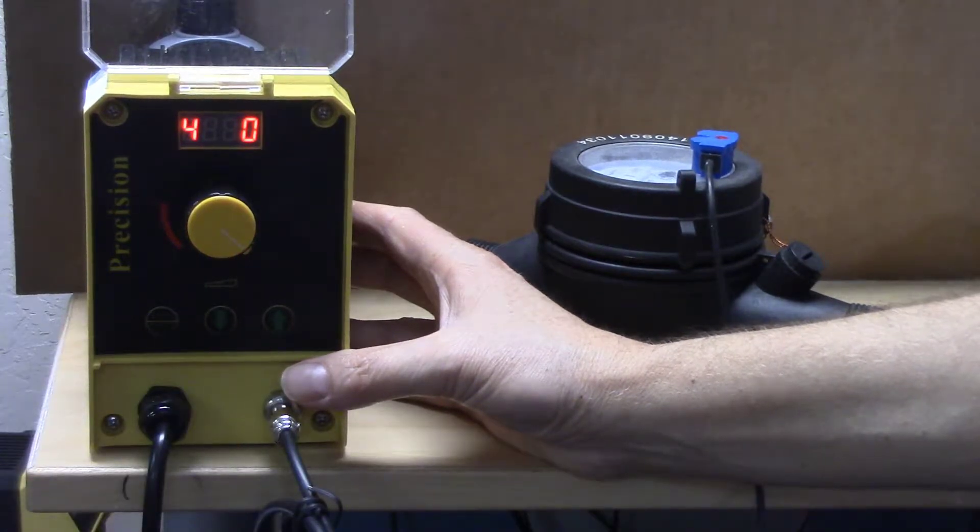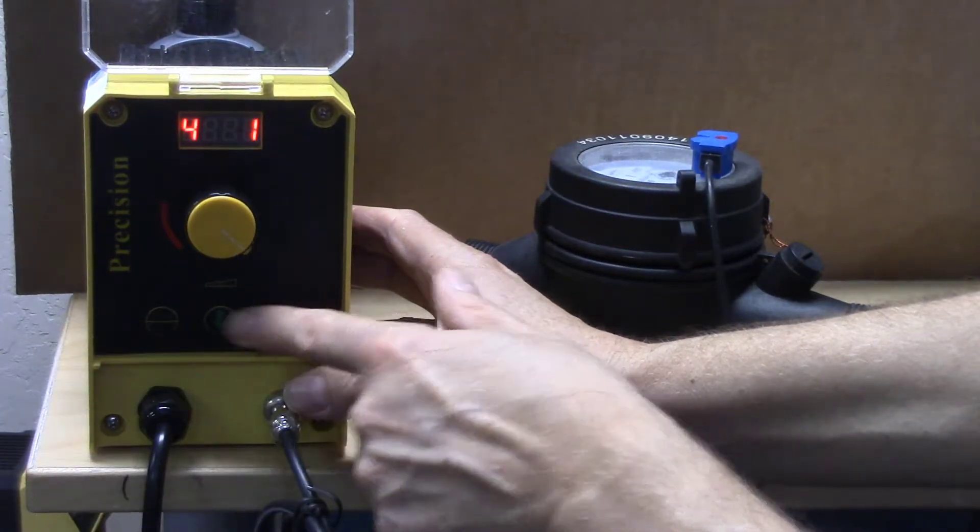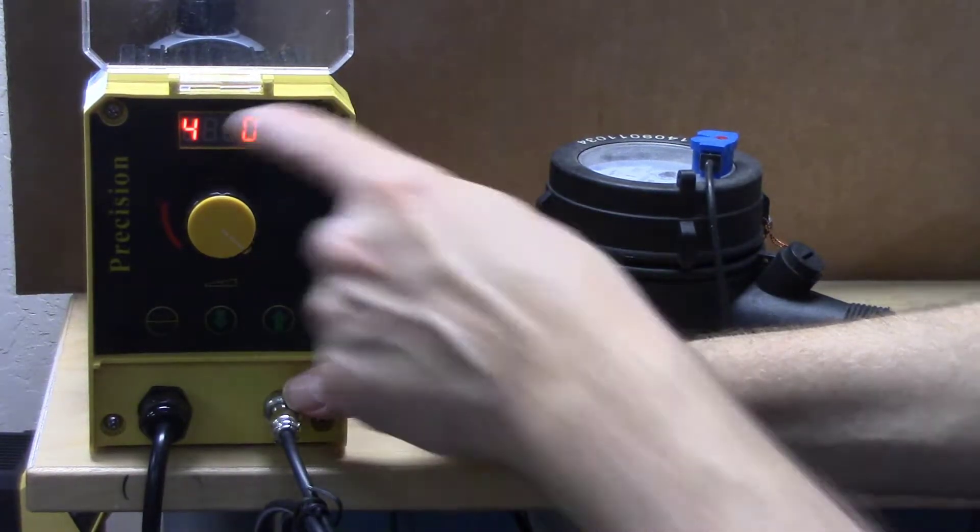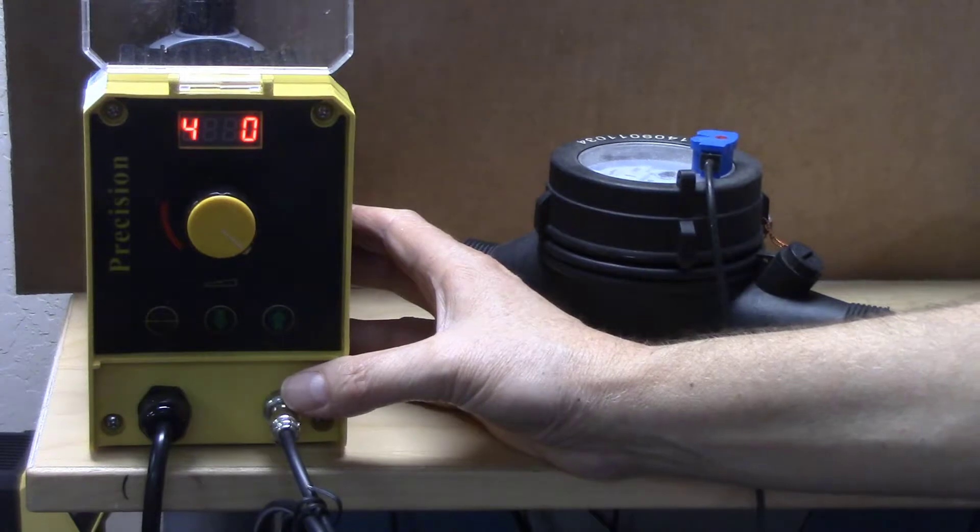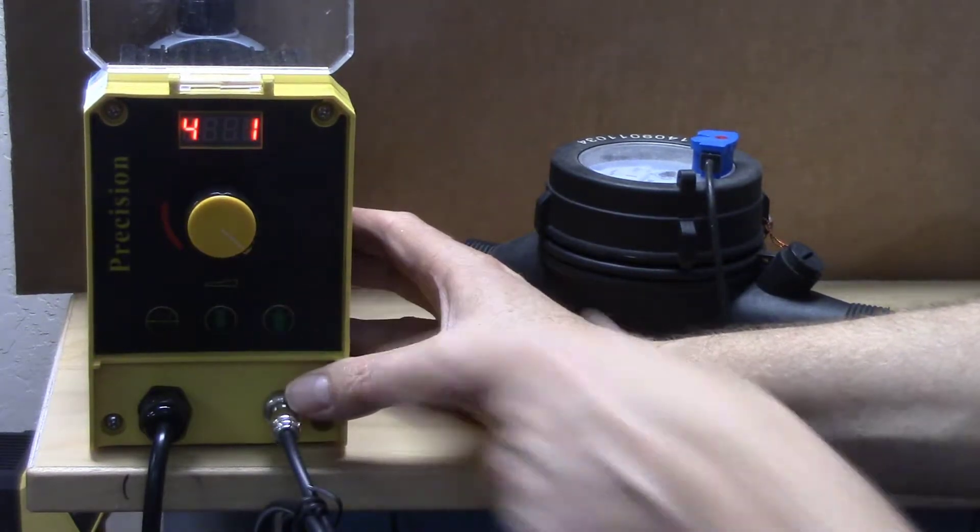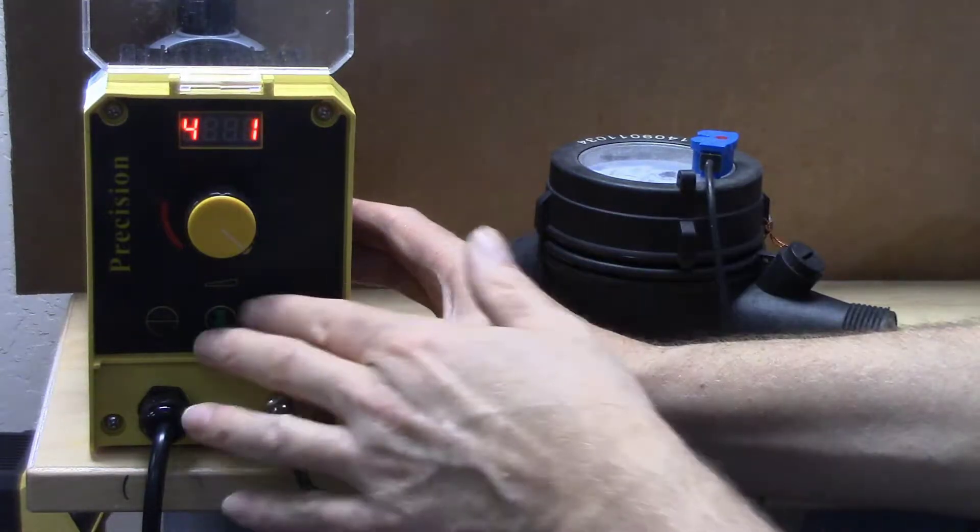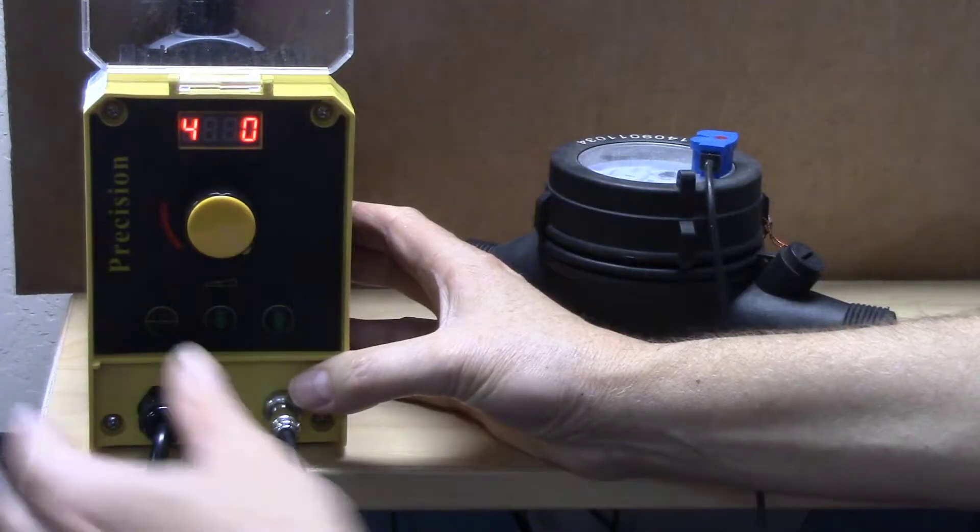Parameter four, the last programming parameter, only has two states: zero and one. It must be on zero. If your pump isn't pumping, go to parameter four and make sure it's on zero. If it's on one, it means it's waiting for an external control input, which we don't have.